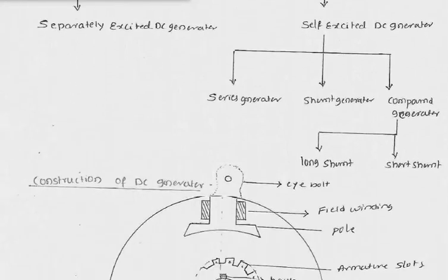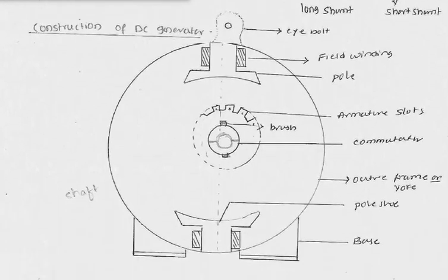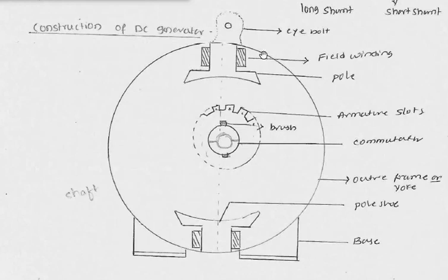Next, we will see the construction of a DC generator. The main parts of a DC generator include the outer frame. The outer frame forms a support structure — it is a mechanical support structure made with cast iron or similar material that gives external support. We also have the main pole system, which is also called the field winding system.